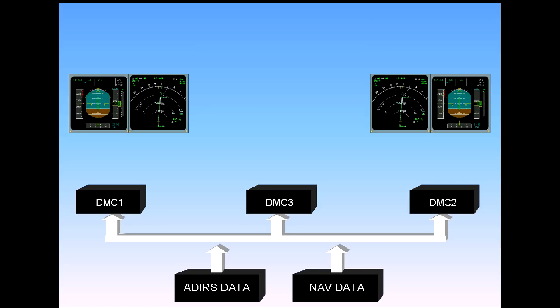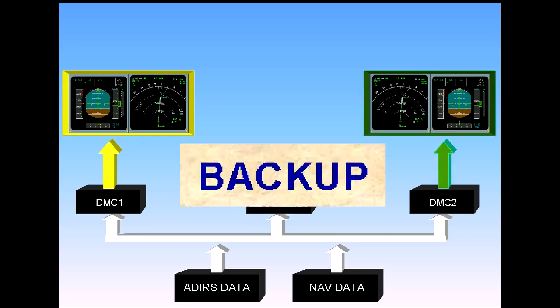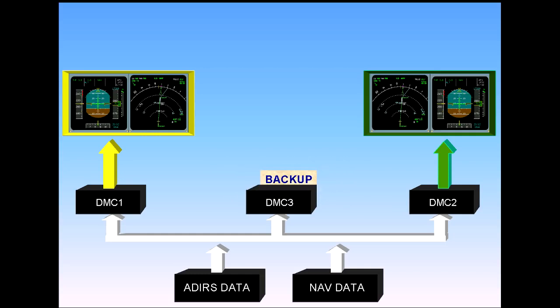The three identical DMCs process the data and generate the images to be displayed. Under normal circumstances, DMC-1 supplies EFIS information to the Captain's PFD and ND. DMC-2 supplies the First Officer's PFD and ND. DMC-3 is available as a backup.